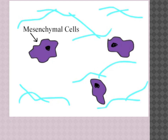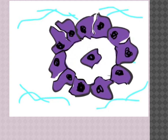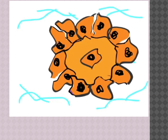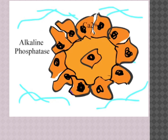Intramembranous ossification takes place in mesenchymal or fibrous connective tissue. Mesenchymal stem cells come together, aggregate, and begin replicating. After sufficient replication, these mesenchymal cells begin differentiating, becoming bone-creating osteoblasts. These newly formed osteoblasts then release an uncalcified bone matrix known as osteoid.